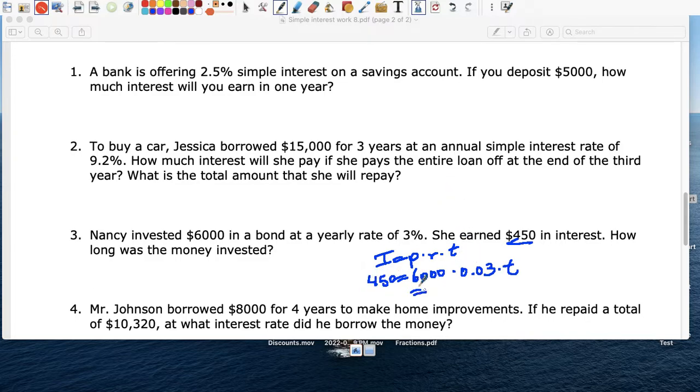So let's multiply, 6,000 times 0.03 equals $180. Divide both sides by $180. T equals $450 divided by $180 equals two and a half years. So you leave money in your bank for two and a half years.